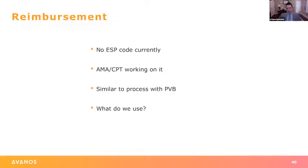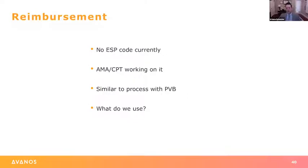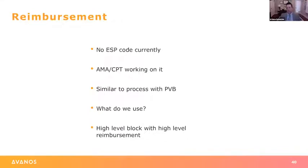On reimbursement: there is currently no specific ESP code. I've been told the AMA and CPT system are working on one, similar to the process that occurred with paravertebral blocks. What we use is the paravertebral catheter code, 64463. When we code it, we submit to insurance companies with the term 'paravertebral block done via the erector spinae plane approach,' and we very rarely get any pushback. This is a high-level block and ends up with high-level reimbursement, and as anyone who does paravertebrals knows, they tend to reimburse quite well.